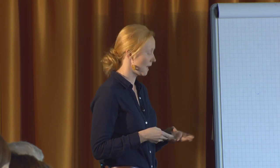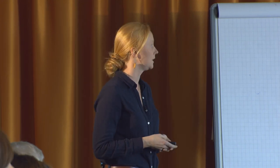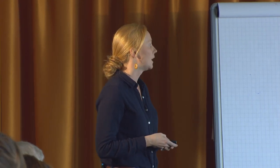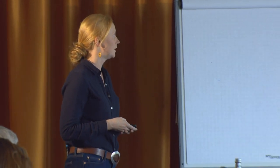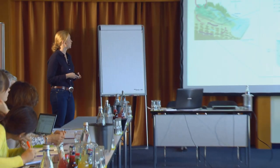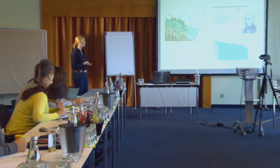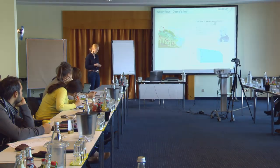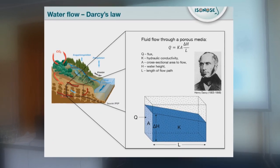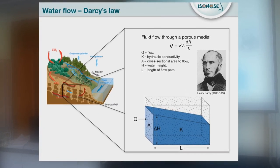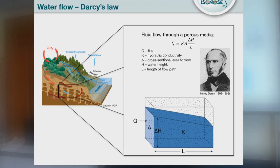Im 19. Jahrhundert entwickelte der französische Ingenieur Henri Darcy Gesetze für den Fluss von Wasser durch poröses Medium. Wenn sich dabei im Grundwasser Gestein auflöst und Sekundärminerale gebildet werden, geht vom freigesetzten Element Lithium das leichte Isotop Lithium-6 in die gebildeten Sekundärminerale, während das freigesetzte Isotop Lithium-7 im Wasser angereichert wird.